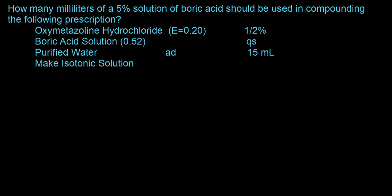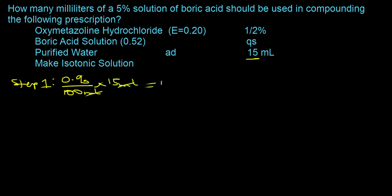This is how you solve this type of question. Step one: determine the amount of sodium chloride needed to make 15 milliliters isotonic. That's going to be equal to 0.9 grams divided by 100 milliliters times 15 milliliters, and that's going to be equal to 0.135 grams sodium chloride.